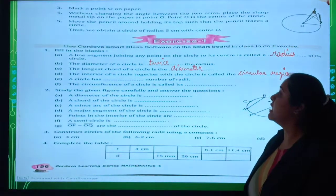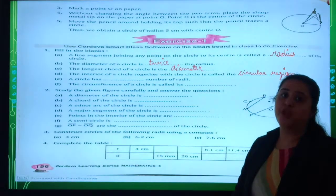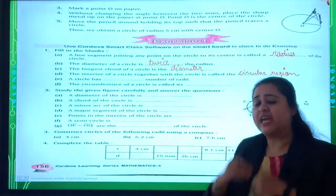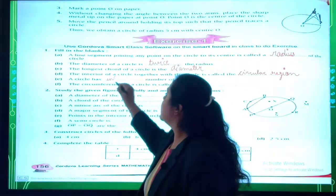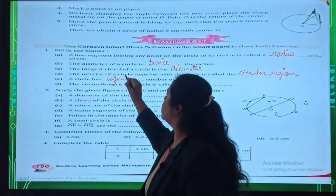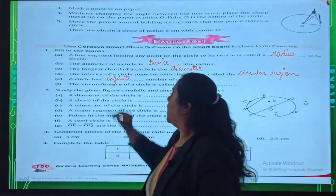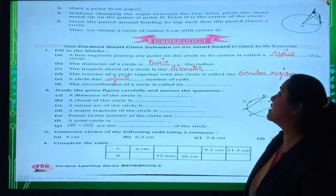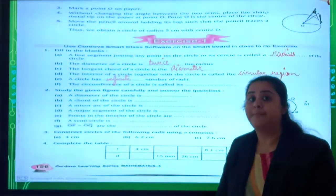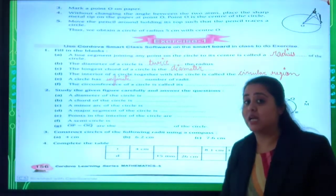E. The circle has infinite number of radii. We have infinite many numbers of radii from the circle. Last one, the circumference of the circle is called its perimeter.